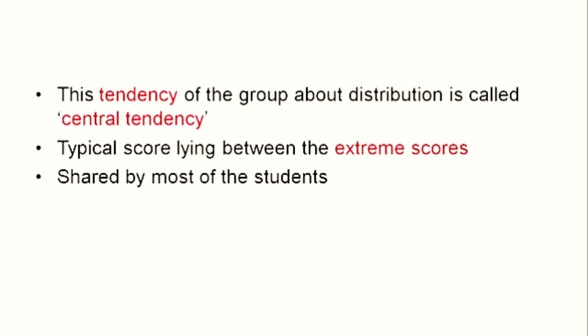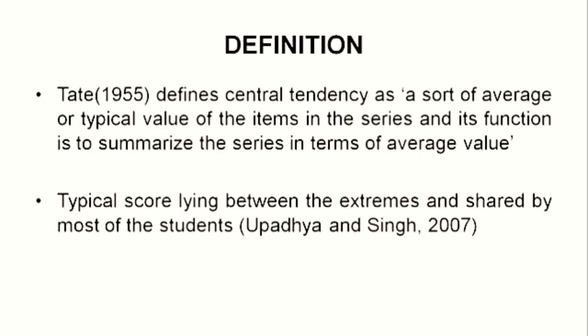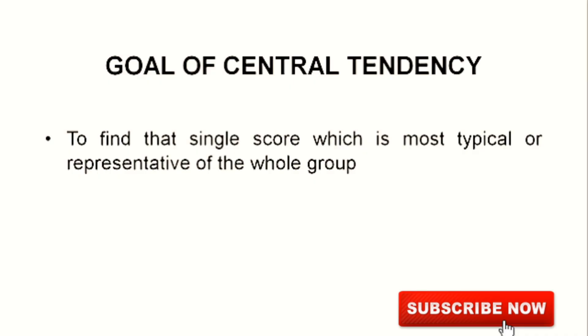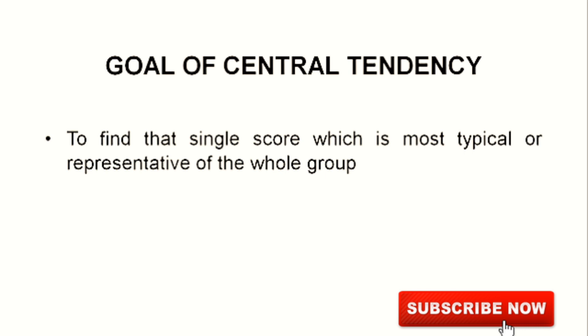It is also shared by most of the students. We will give two definitions for central tendency. According to Tate (1955), central tendency is a sort of average or typical value of the items in the series, and its function is to summarize the series in terms of average value. In another definition given by Upadhyaya and Singh (2007), central tendency is a typical score lying between the extremes and shared by most of the students. The goal of central tendency is to find that single score which is most typical or representative of the whole group.